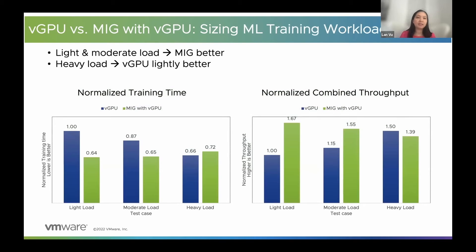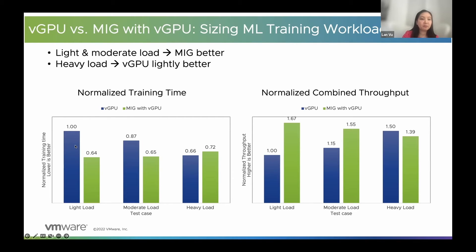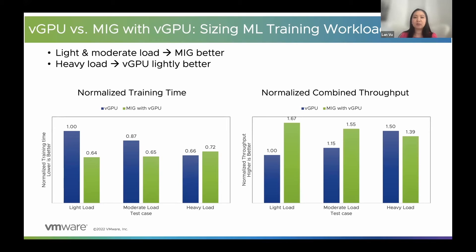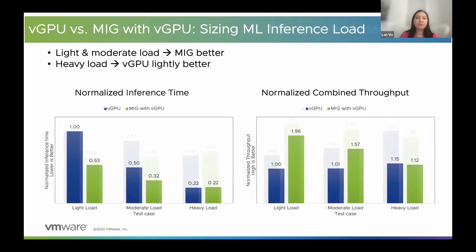Here are the results for training machine learning workloads. The blue bar is vGPU and the green is MIG vGPU. The result is a little bit mixed between vGPU and MIG. For light and moderate workloads, MIG performs better compared to vGPU. But when we have the heavy workload, which is stressful in using GPU resources, vGPU performs a little bit better compared to MIG. We see similar results for inference as well — light and moderate workload: MIG better; heavy workload: vGPU slightly better. So it's not always the case that we should choose MIG — in some cases vGPU can be a slightly better choice.